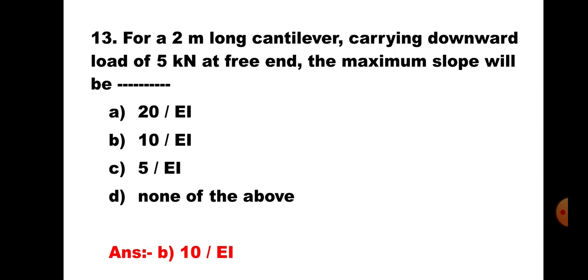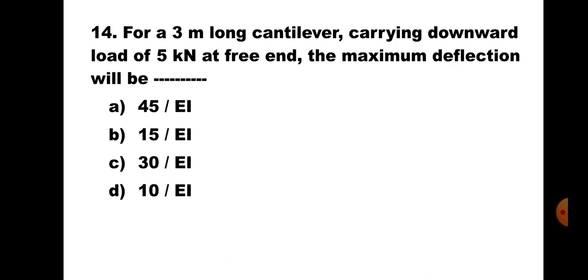Question number 14. For a 3m long cantilever carrying a downward load of 5kN at the free end, the maximum deflection will be: A. 45/EI, B. 15/EI, C. 30/EI, D. 10/EI. This is the standard case of a cantilever carrying a point load at the free end. The maximum deflection is WL³/3EI. Putting the values, you will get the answer as 45/EI. Hence, the correct answer is A. 45/EI.